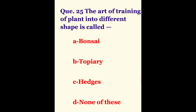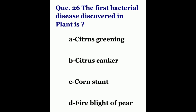Question 25. The art of training plants into different shapes is called? The options are bonsai, topiary, hedges, or none of these. The correct answer is topiary.